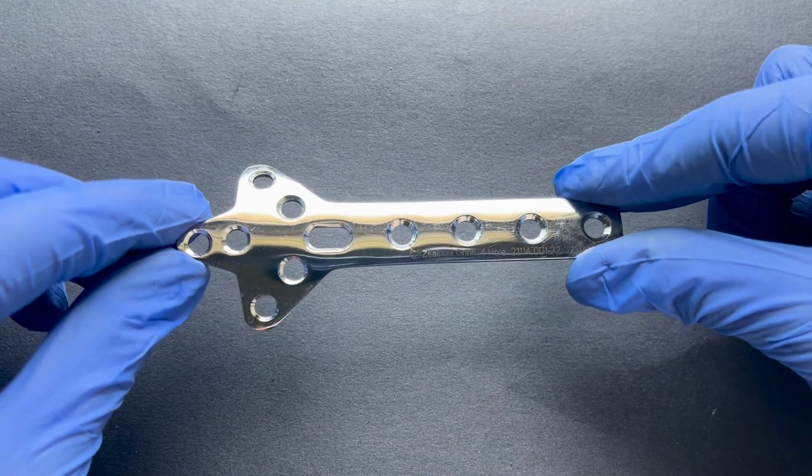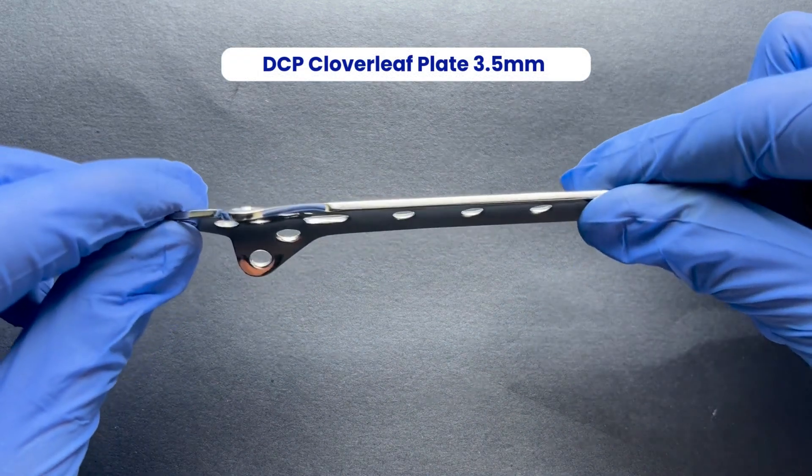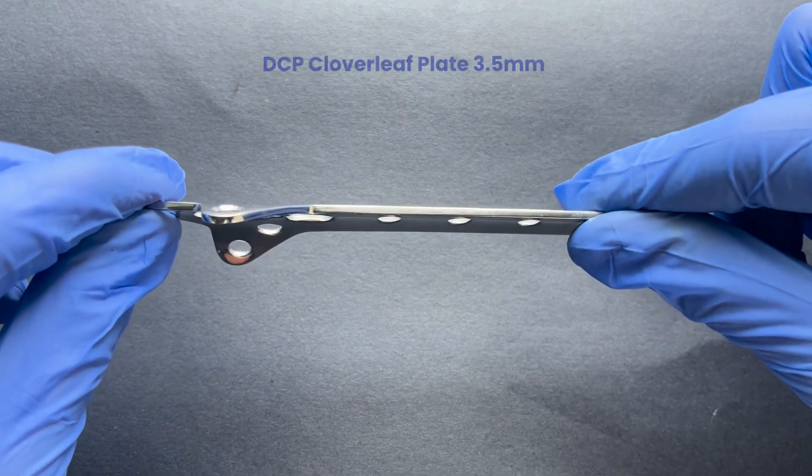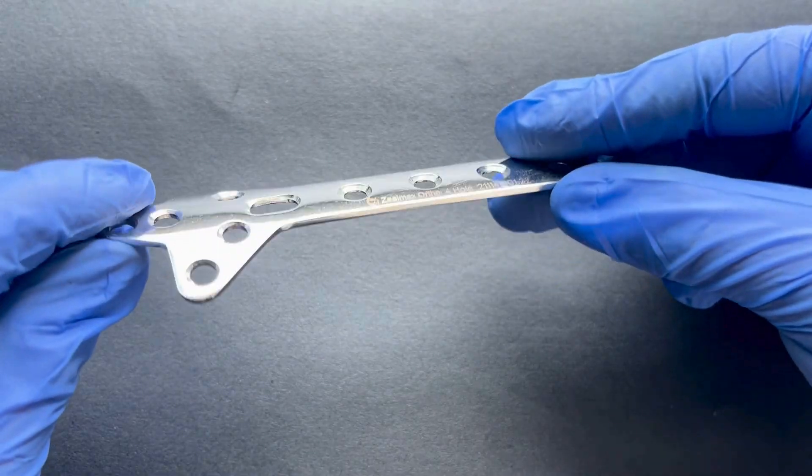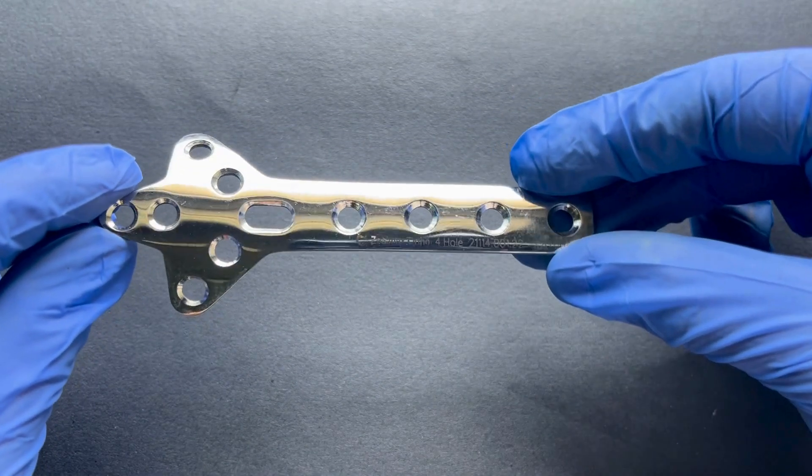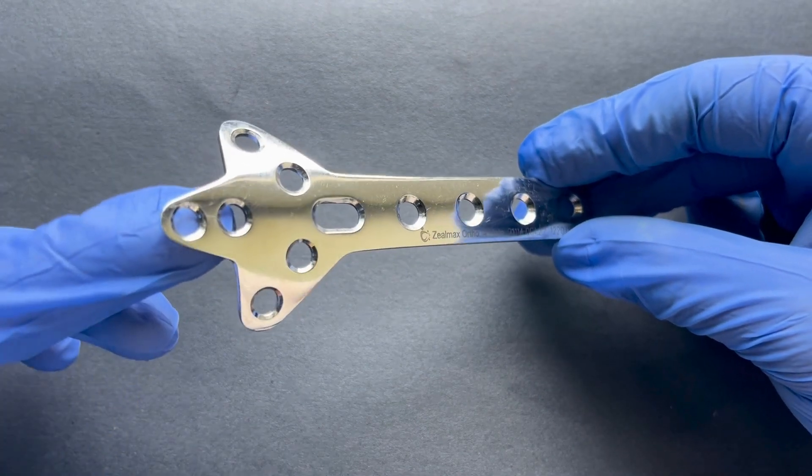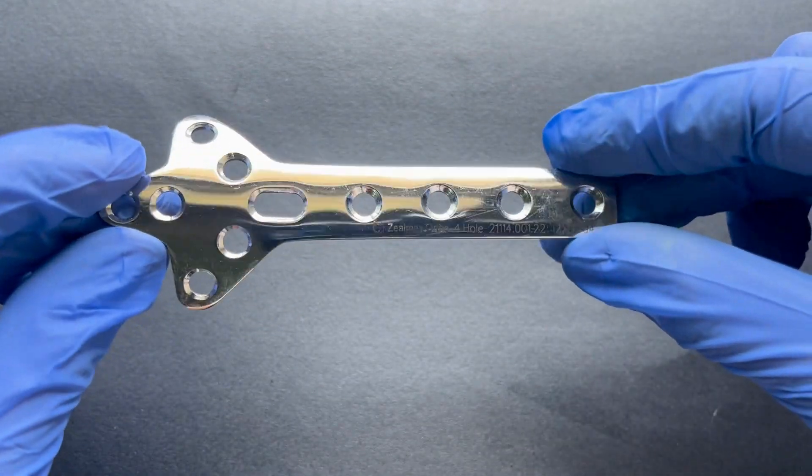Next up is the 3.5mm DCP cloverleaf plate. It is ideal for periarticular fractures, offering multidirectional fixation. Its cloverleaf design provides adaptable compression for precise fracture management.